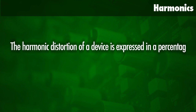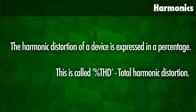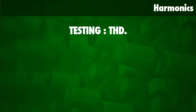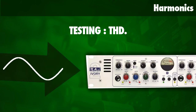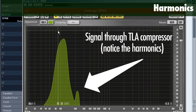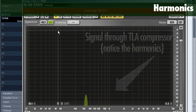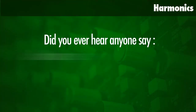The harmonic distortion of a device is expressed as a percentage. In the specifications of a device this is referred to as THD, or total harmonic distortion. I'm going to perform a test where I run a sine wave through a compressor — the TL Audio 5021 — completely neutralized, so it's not compressing or doing anything. I'm just running the signal through it. That is really what an electronic device does.